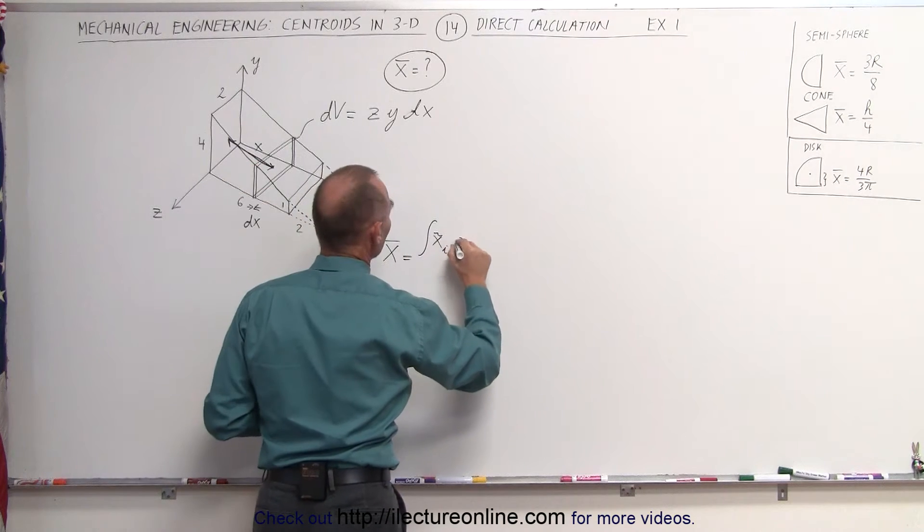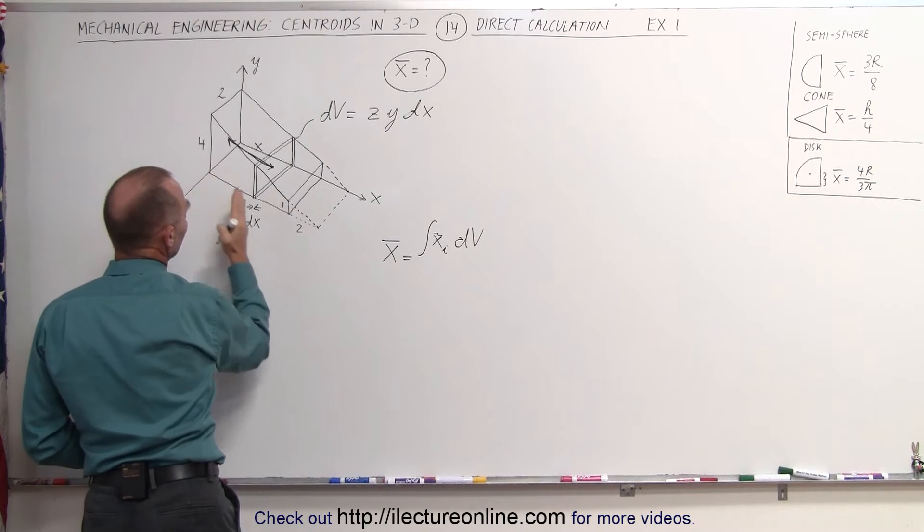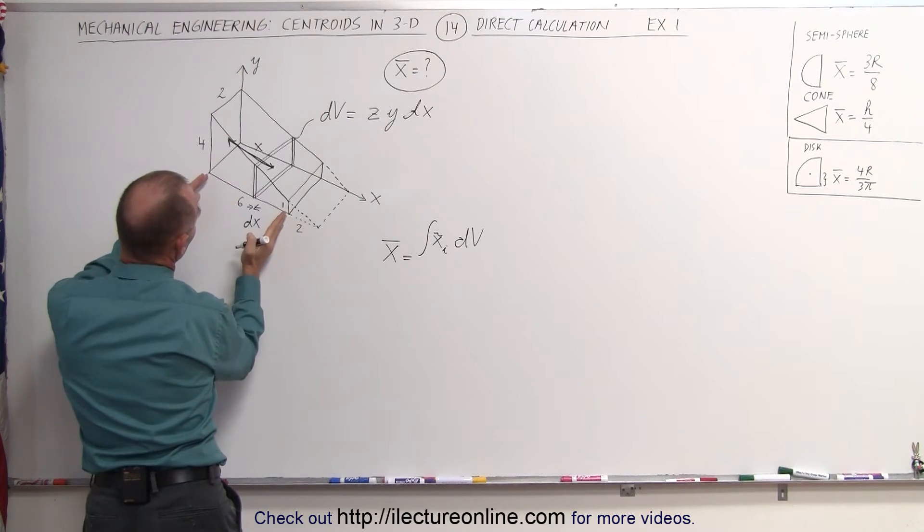Times the volume of that, which would be a small little dv. We have to integrate from x equals 0 to x equals 6 because the distance from there to there is 6.